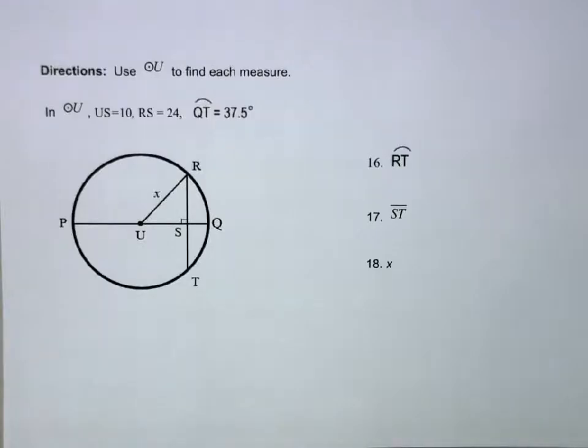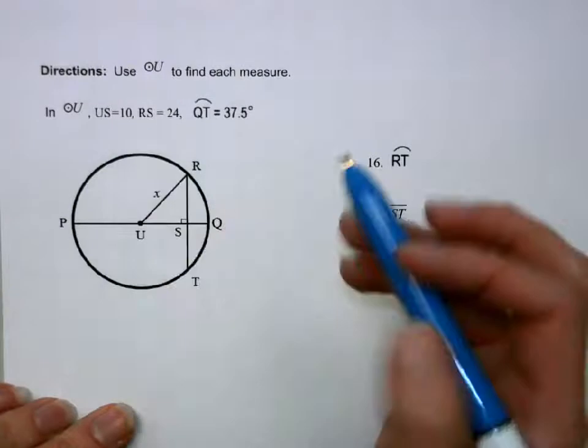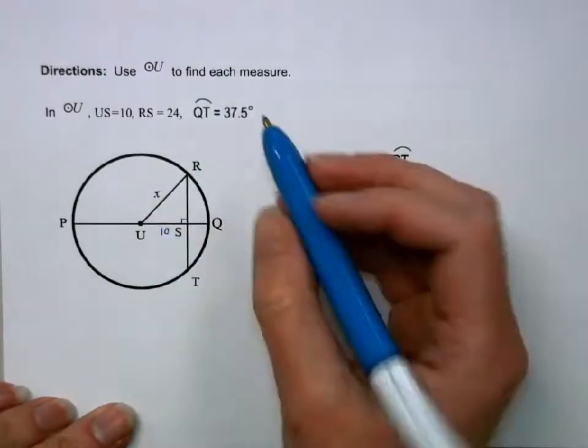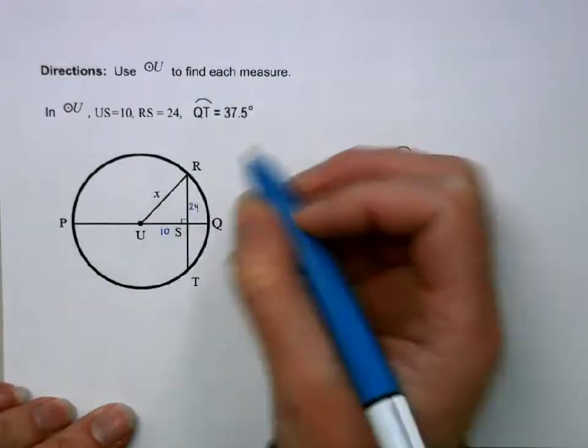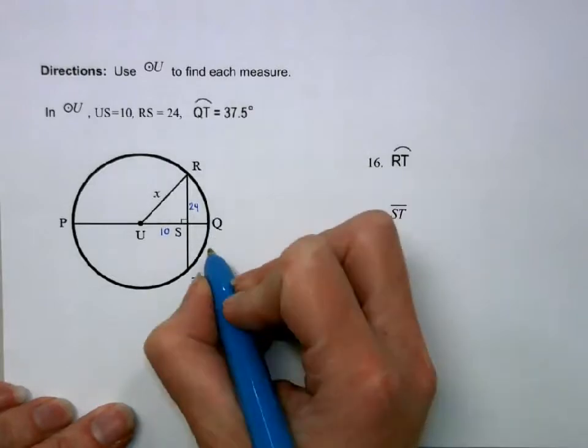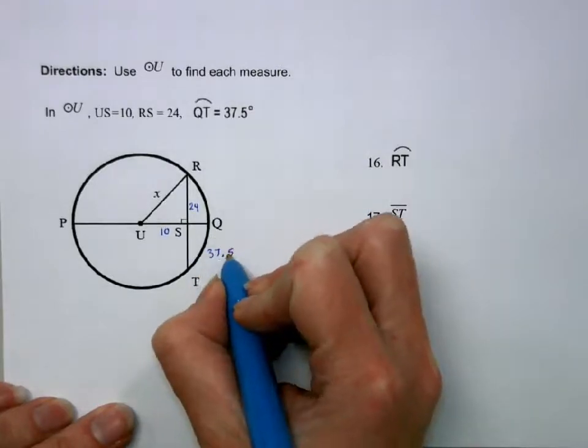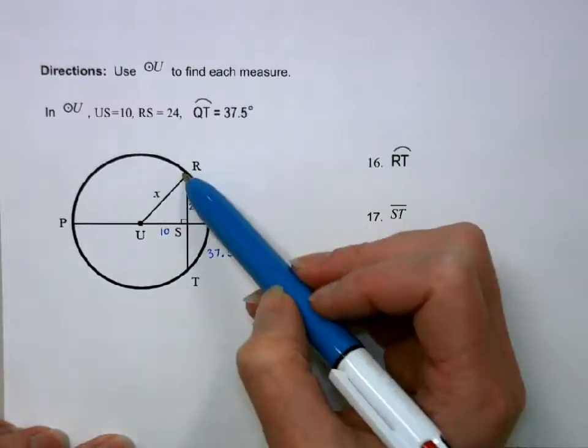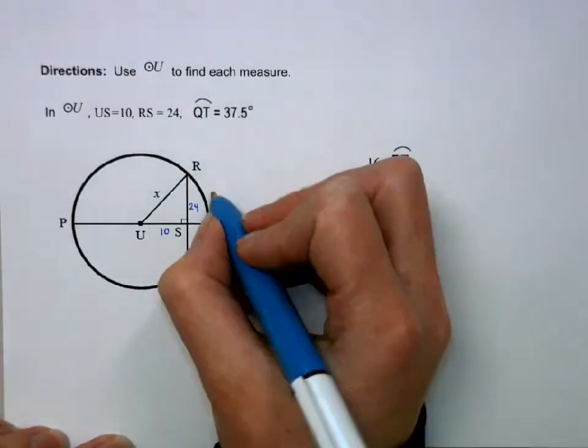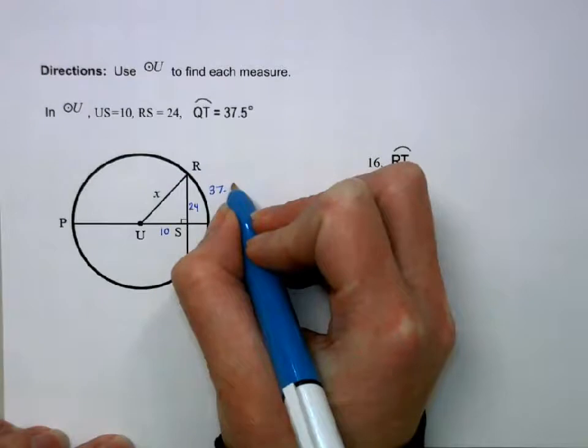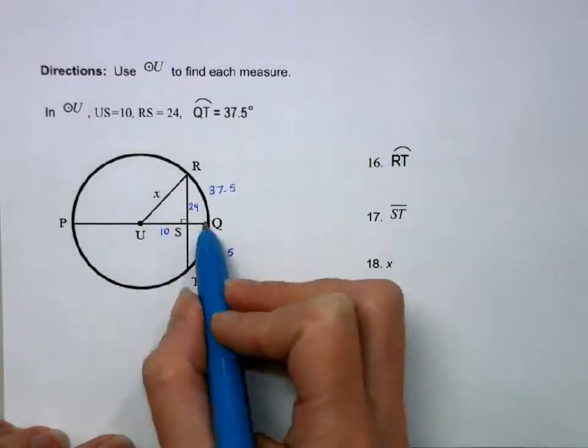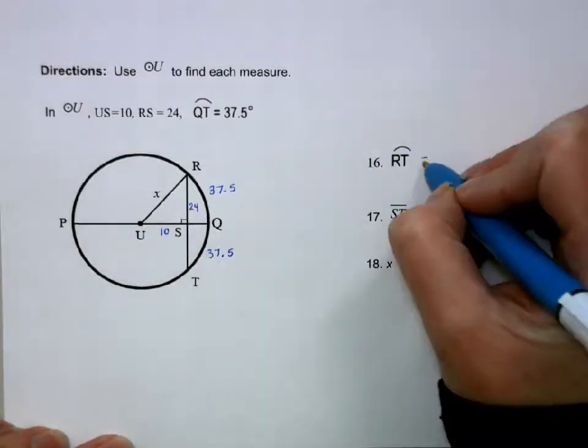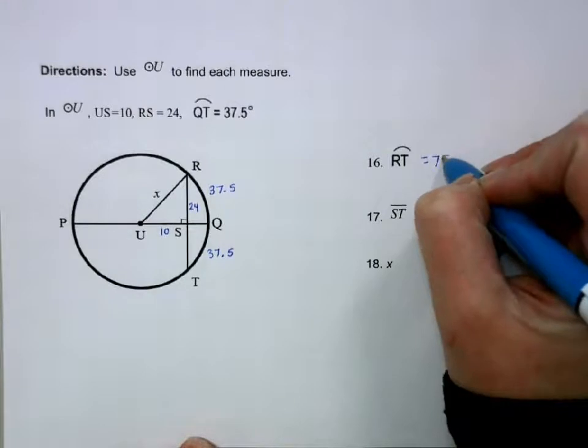All right, in our picture, US is 10, RS is 24, and QT is 37.5. And we want to find these measures. So RT, if this is 37.5, this is 37.5. And that's just a property if this is perpendicular. So this is going to be 75 when I add those two together.